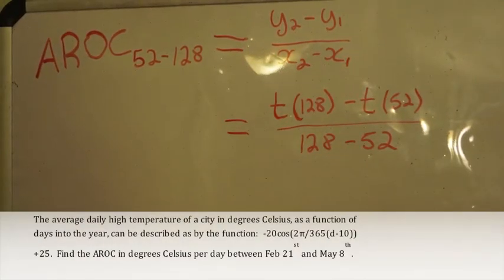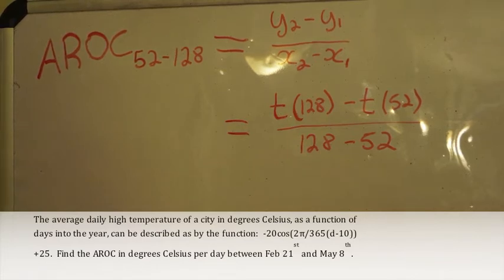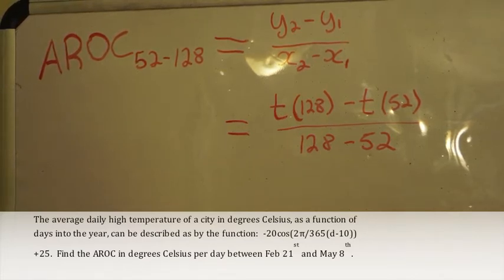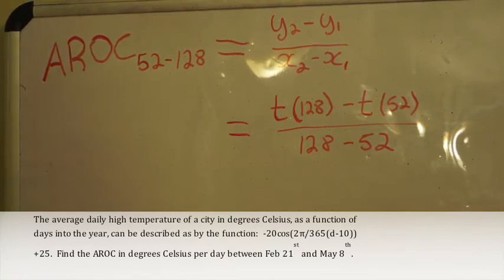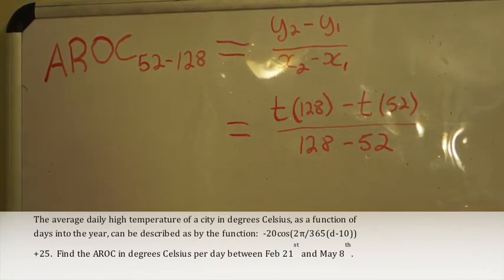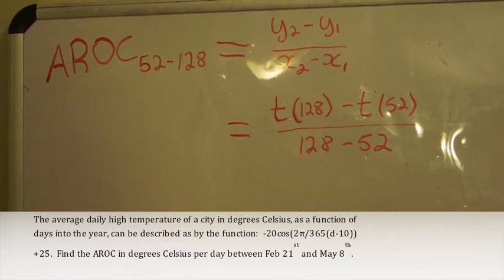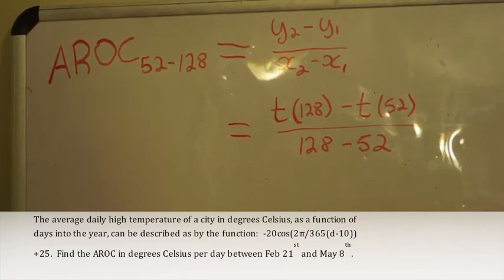Now it's time to make our AROC equation. Since AROC is finding the slope of a secant, we will use the equation (y2 - y1)/(x2 - x1) that we learned in grade 9. However, in this case we must use the equation given in the question to find our y values.